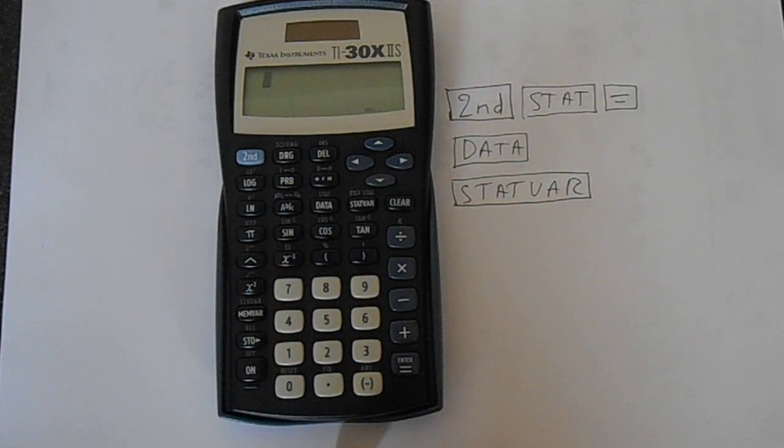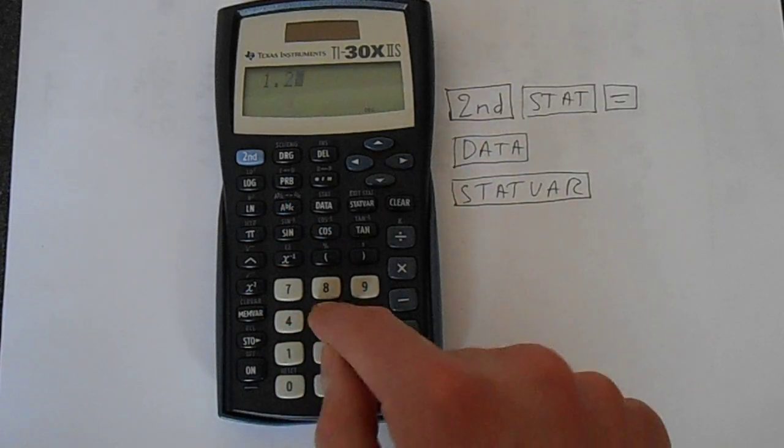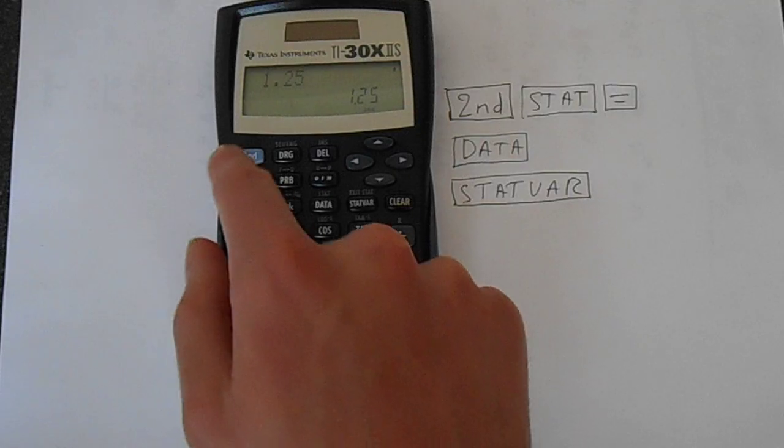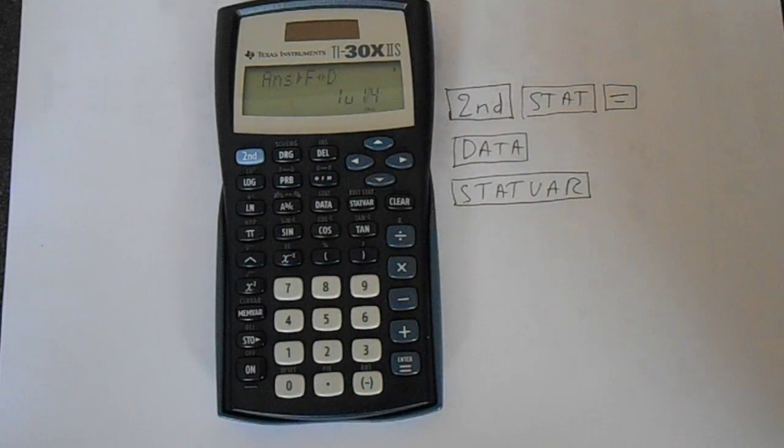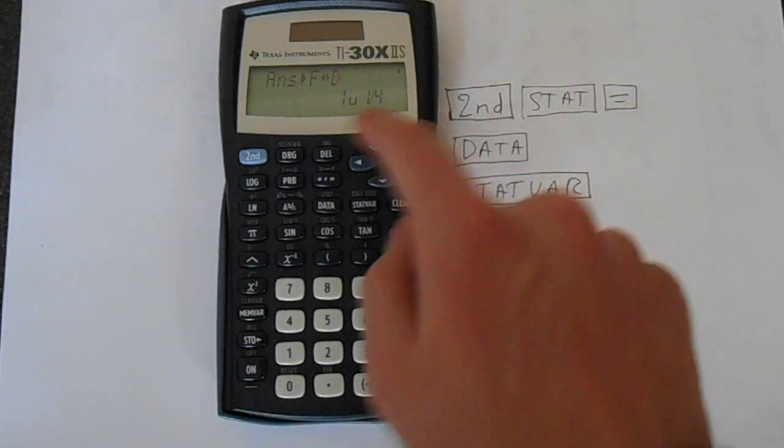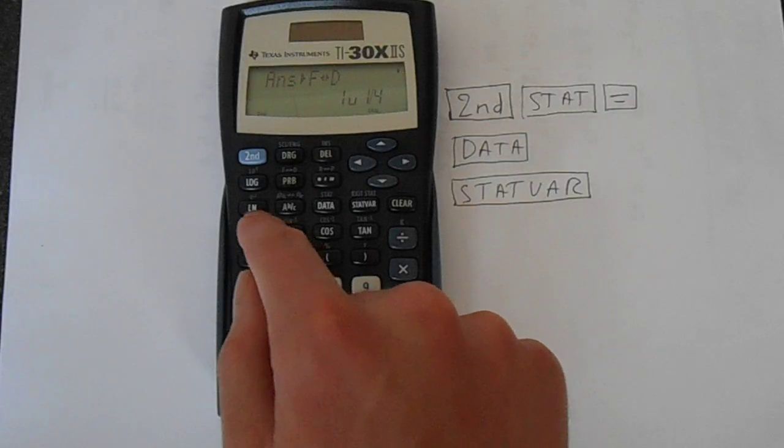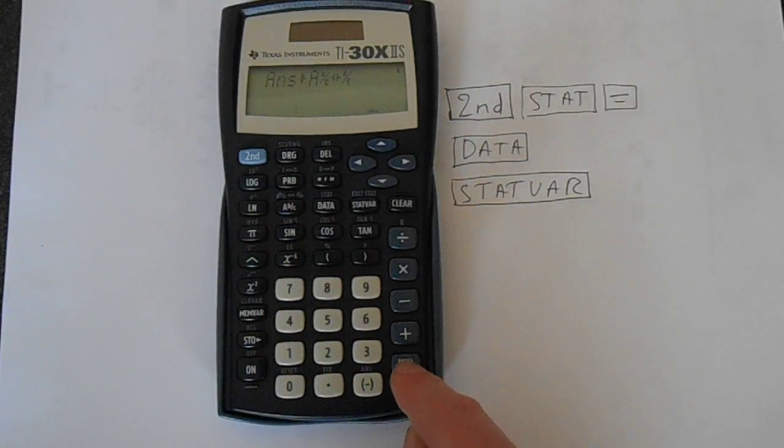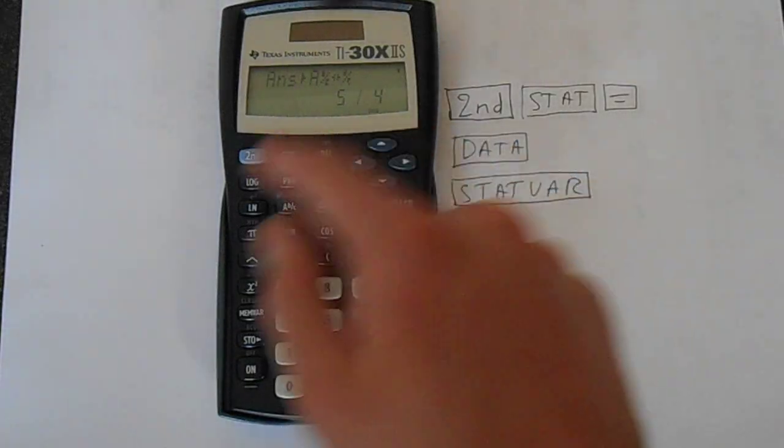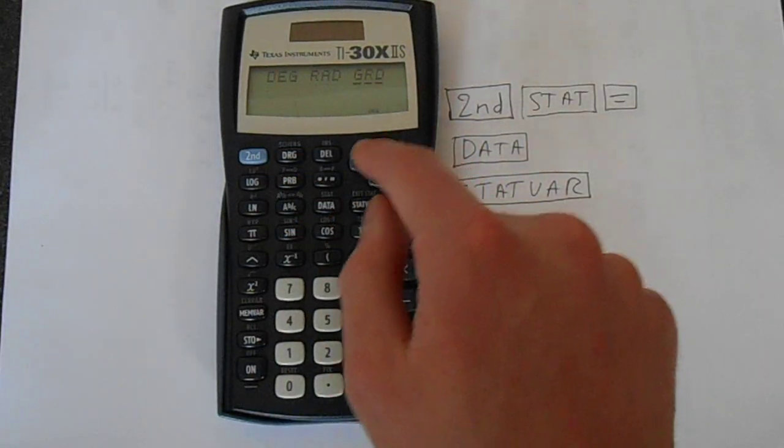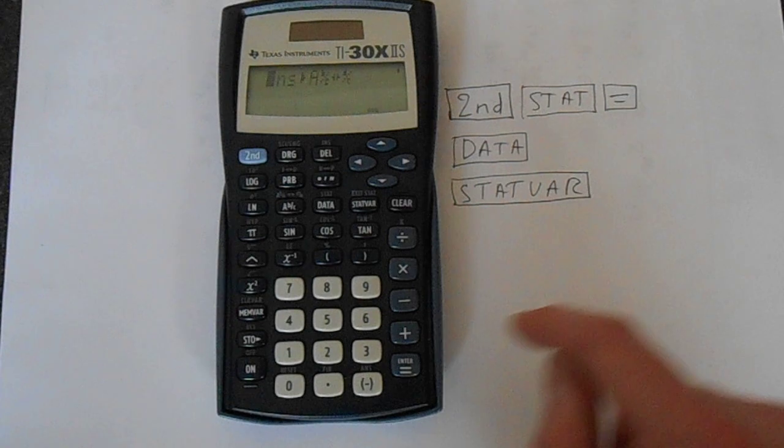You can switch between mixed fractions. Say 1.25, and you do second function, fraction to decimal, equals. It can give you that as a mixed fraction, so 1 and 1 quarter. Or if you press second function and then this button, enter, you get it as 5 over 4. Or of course you can convert between degrees, radians, and gradients, like so.